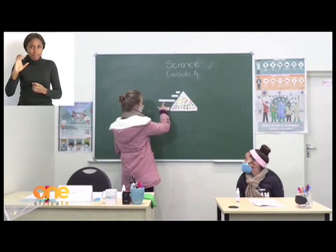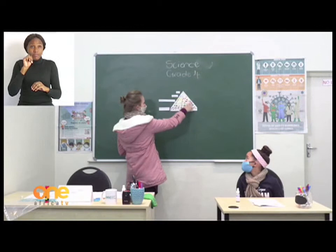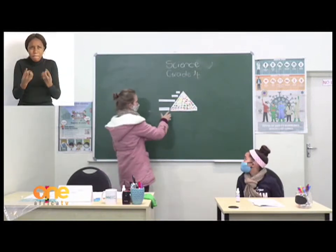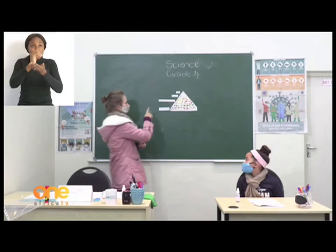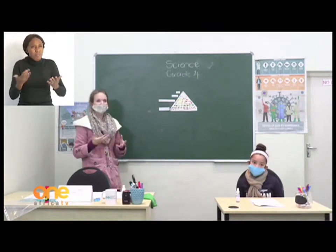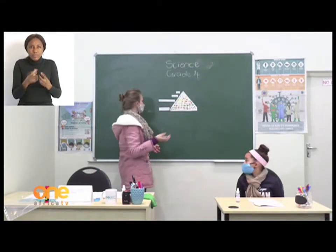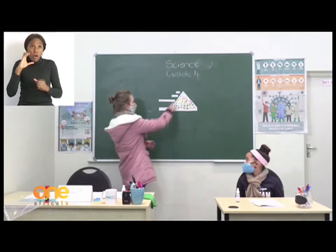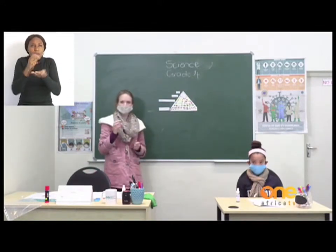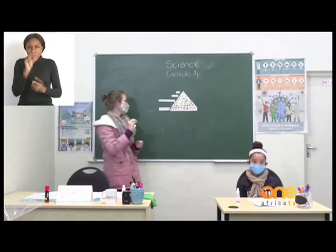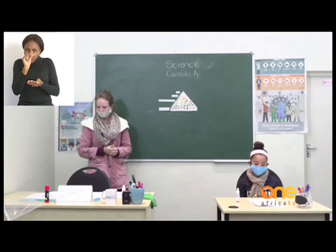Then we move up to the smaller parts of the triangle: proteins and fats. Proteins are normally found in meat and dairy products, and our body needs a little bit less protein than carbohydrates. Right at the top — the smallest part — we have fats, so your body needs fats but a little bit less than proteins and carbohydrates.